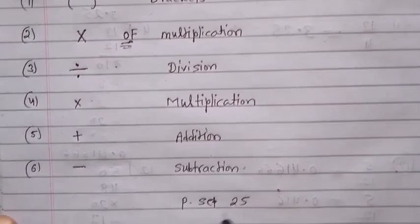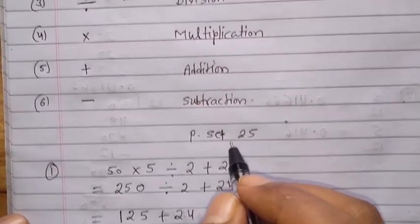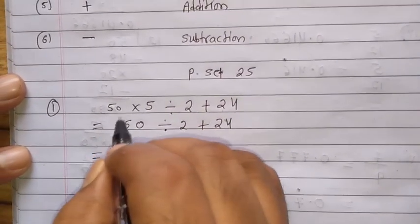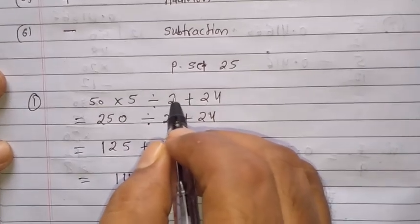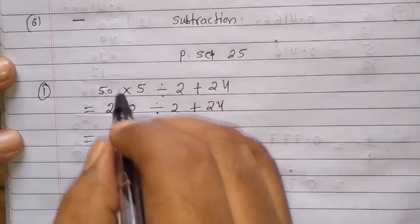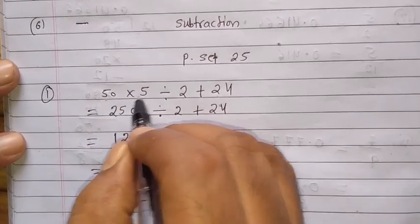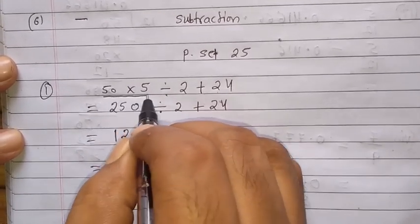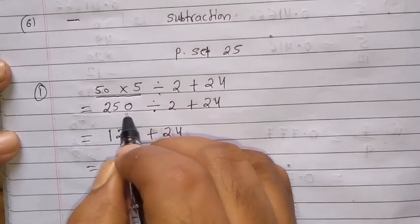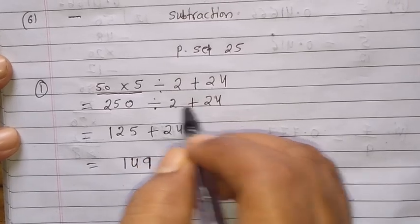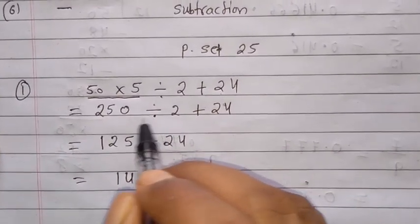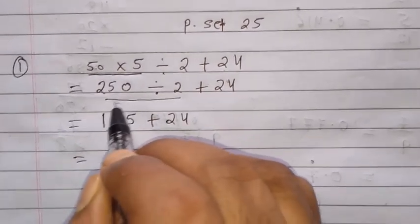Practice set 25 is based on this concept. Let me solve question number 1: 50 into 5 divided by 2 plus 24. First I am solving the multiplication. 5 × 0 = 0, 5 × 5 = 25, so 50 × 5 = 250. So we have 250 divided by 2 plus 24.